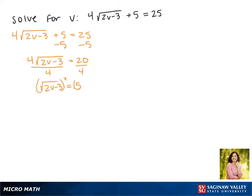Now to get rid of the square root, we're going to square both sides. On the left side it cancels, giving us 2v minus 3, and on the right we get 25.